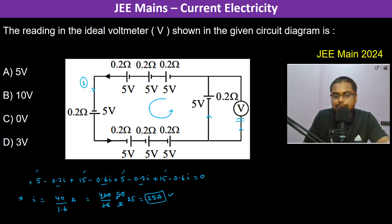So therefore due to this 0.2 ohm, due to this 0.2 ohm, due to this 0.2 ohm, the potential is going to actually decrease.